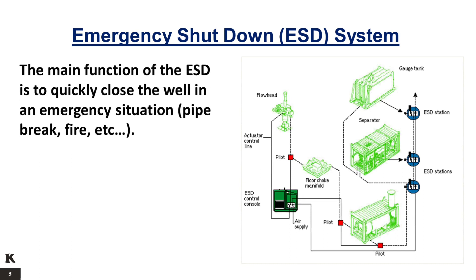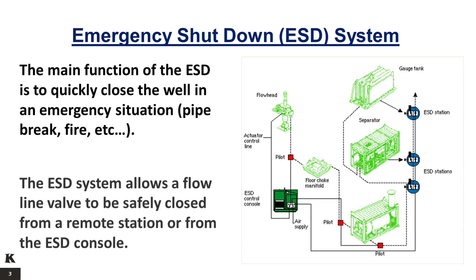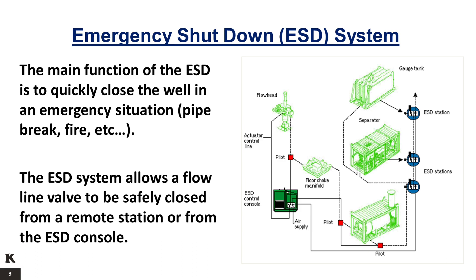The main function of the ESD is to quickly close the well in an emergency situation — pipe break, fire, etc. The ESD system allows a flowline valve to be safely closed from a remote station or from the ESD console. The well test emergency shutdown allows remote closing of a flowline valve should quick closure be necessary due to pipe leak or burst, separator malfunction, fire, etc. The system is suitable for connection to the actuated flow head valve or any other single-action, fail-safe, hydraulic actuated valve.